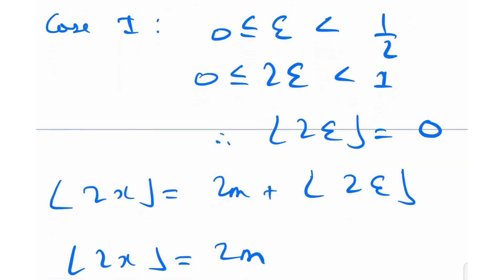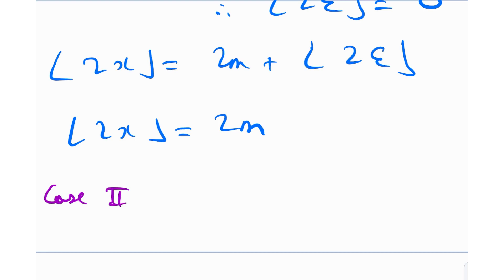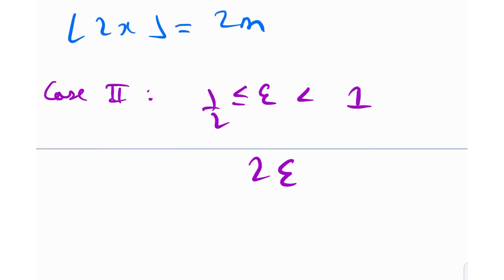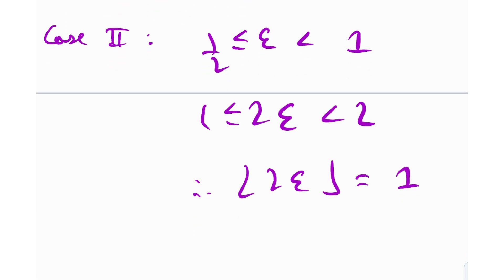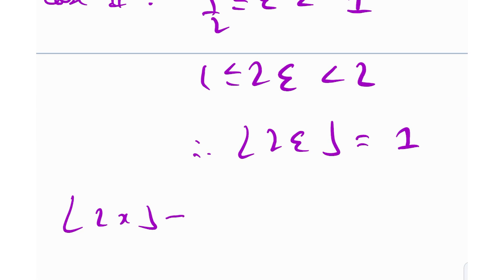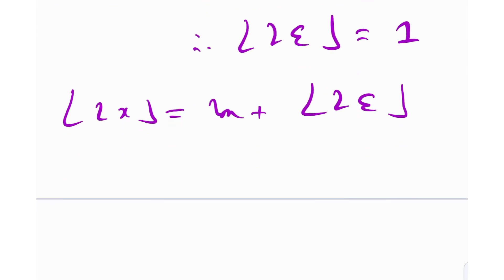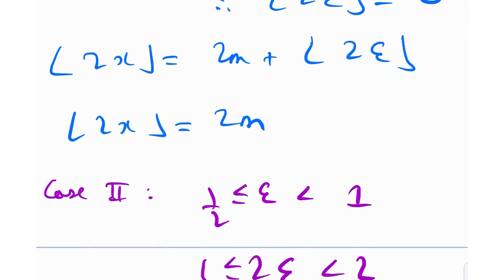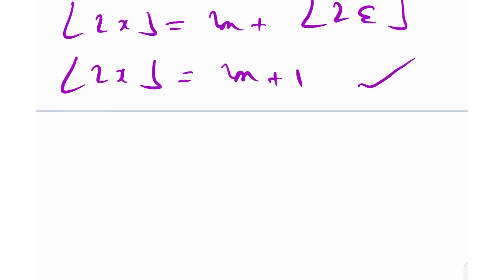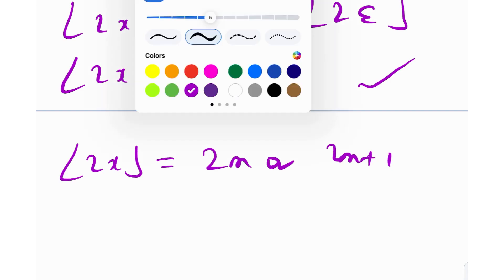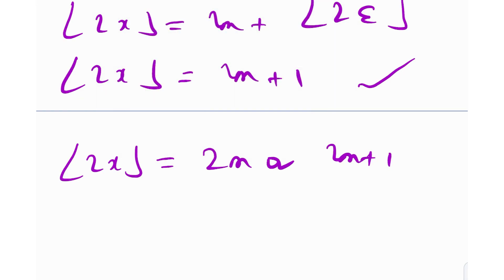Case 2: ε between 1/2 and 1, so 2ε is between 1 and 2, and floor(2ε) = 1. Therefore floor(2x) = 2m + 1. So we're realizing that floor(2x) is either 2m or 2m + 1 depending on the case.